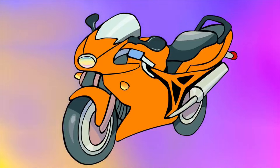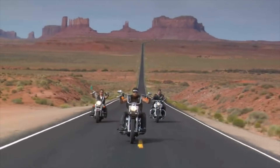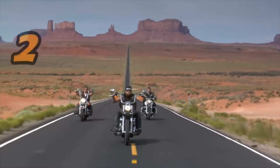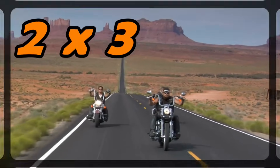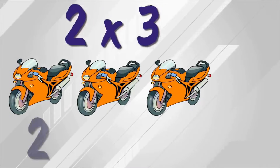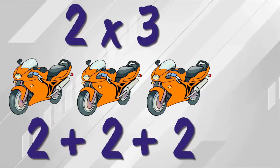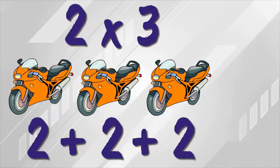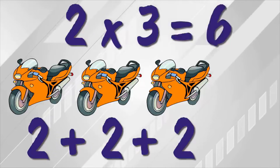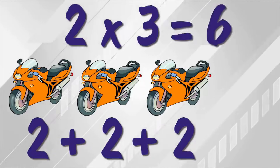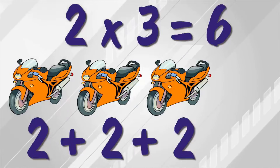A motorcycle has two wheels also. Here are three motorcycles. To find the total number of wheels, we have the number two, three times — two times three. Two times three is the same as two plus two plus two. It's the number two, three times. What is two times three? Six. There are six wheels in all. Two times three equals six. There are a total of six wheels when you have three motorcycles.